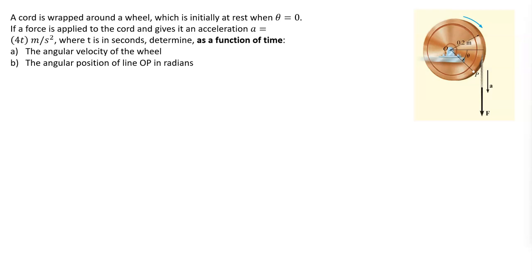So let's go through this one example. It is: a cord is wrapped around a wheel which is initially at rest when theta angular position is equal to zero.